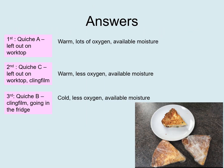Quiche A has been left on the worktop without any covering. It's warm in the kitchen, there's lots of oxygen available because it's not been covered, and there's moisture available because the quiche is moist — so all these conditions are good for decomposers, and that quiche is going to go bad first. The second to go bad would be quiche C, left on the worktop but wrapped in cling film. It's still in warm conditions, but there's a bit less oxygen because it's wrapped up, though there's still available moisture.